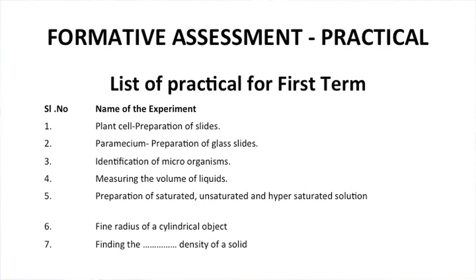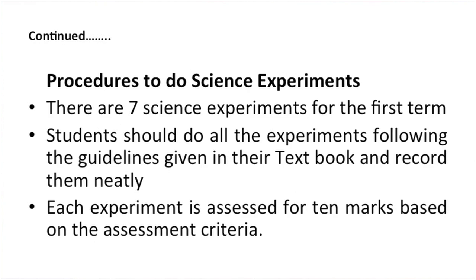For formative assessment, the list of practicals can include preparation of slides, preparation of microorganisms, measuring volume of liquid, and finding the radius of cylindrical objects. For assessment of scientific experiments, there should be a large number of experiments — for example, in the first term there should be seven science experiments. Students should do all experiments following textbook guidelines and record them neatly. Each experiment should have mark-based assessment defined in advance. A minimum of four experiments should be assessed, with rewards of forty marks given out of seven.